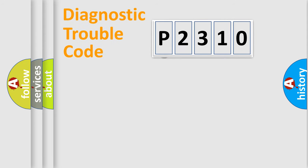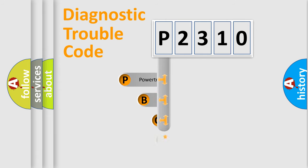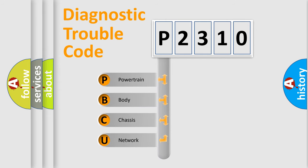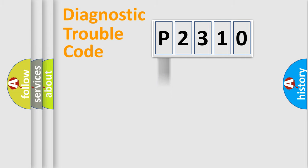First, let's look at the history of diagnostic fault code composition according to the OBD2 protocol, which is unified for all automakers since 2000. We divide the electric system of an automobile into four basic units: Powertrain, Body, Chassis, and Network. This distribution is defined in the first character of the code.